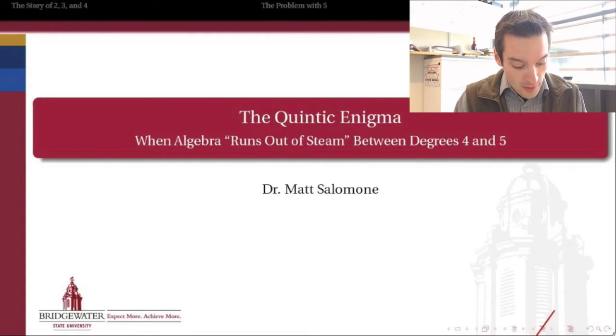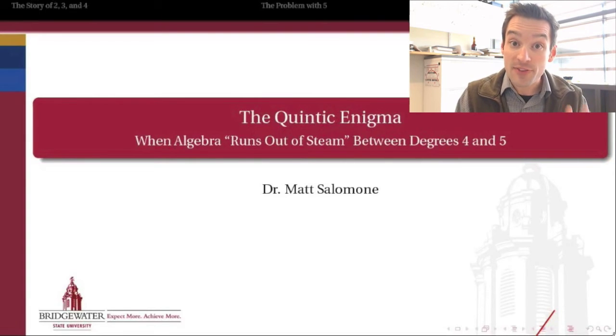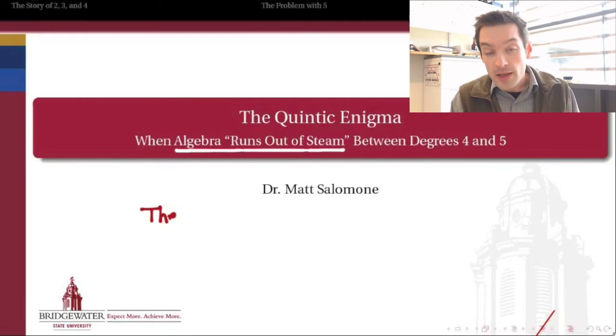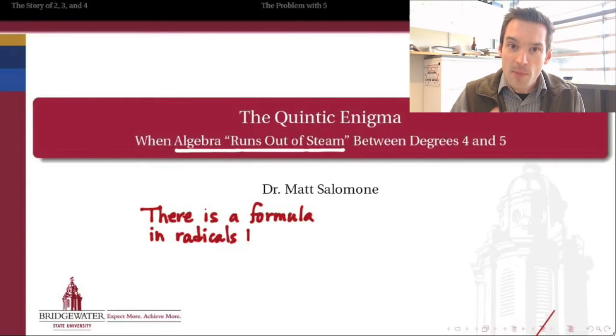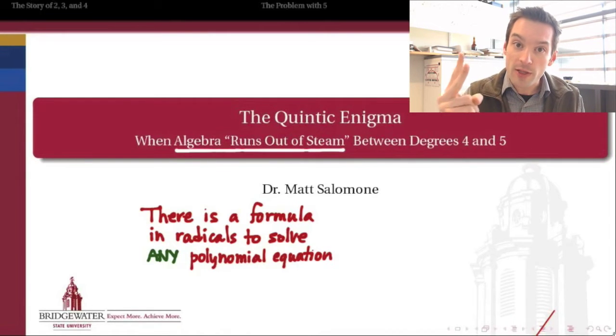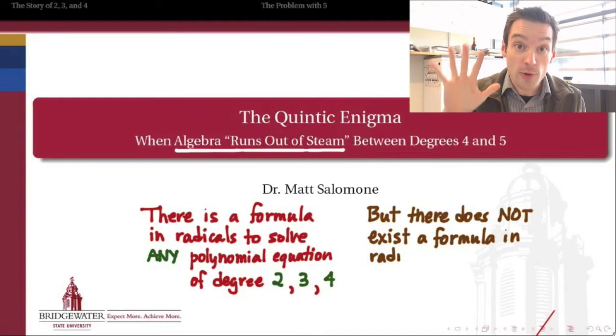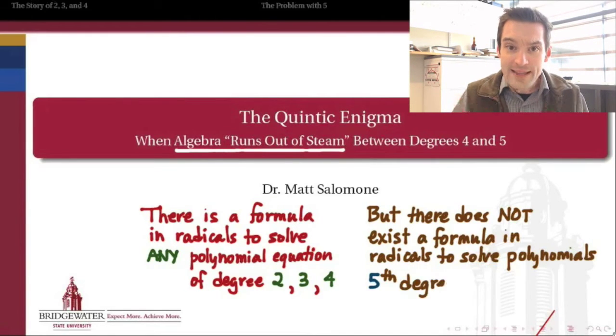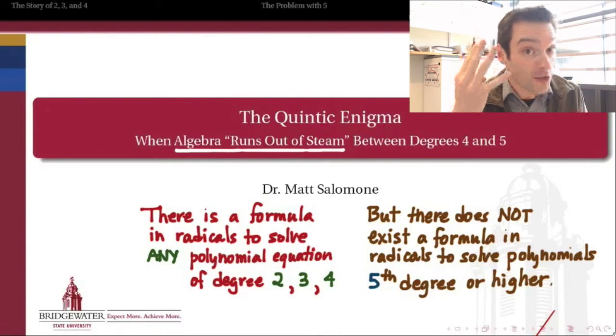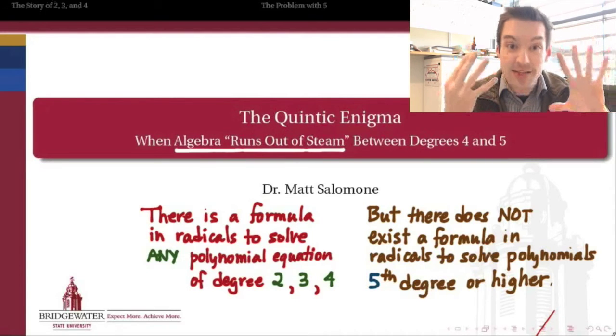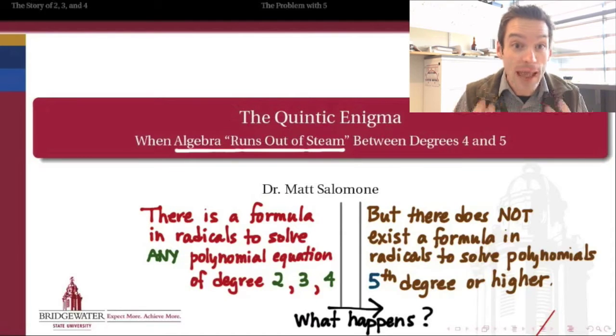So we get to the last question: what is it about the fifth-degree polynomial that makes its roots more difficult to find than the fourth, third, and second orders? We're ready to solve the mystery of Quintic Impossible. Why is it that algebra runs out of steam between degrees four and five? Why is there a formula in radicals to solve every polynomial of degree two, three, and four, but no such formula for any polynomial of degree five or greater? Something happens there in between where algebra runs out of steam.